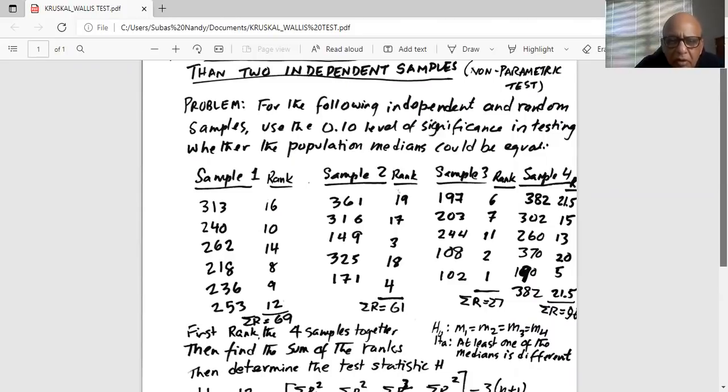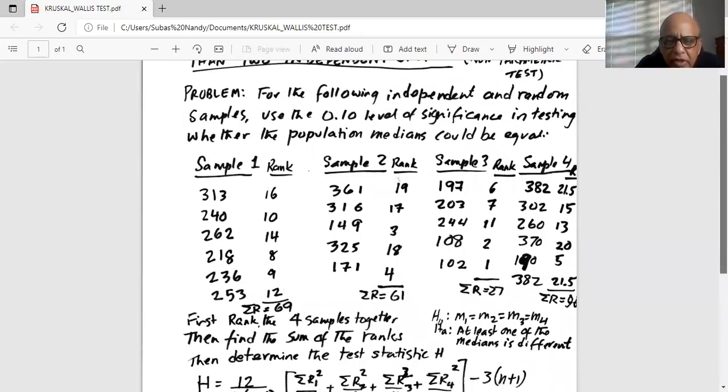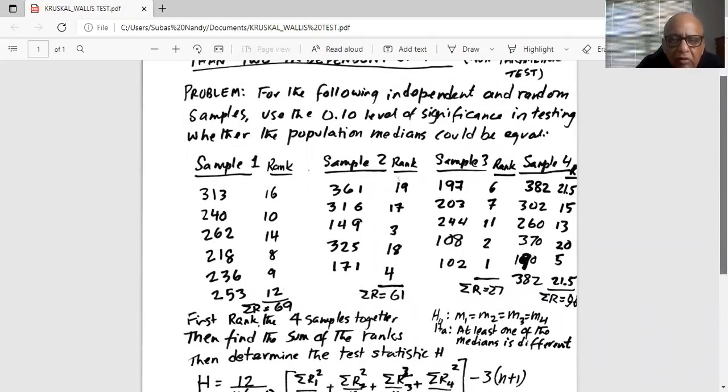Now remember, we have to rank the four samples together. So for example, the lowest among all four samples is 102. Its rank is one. Then it is 108. Its rank is two. Next is 149 in sample two, its rank is three. 102 and 108 data points are in sample three. The ranks are one and two.